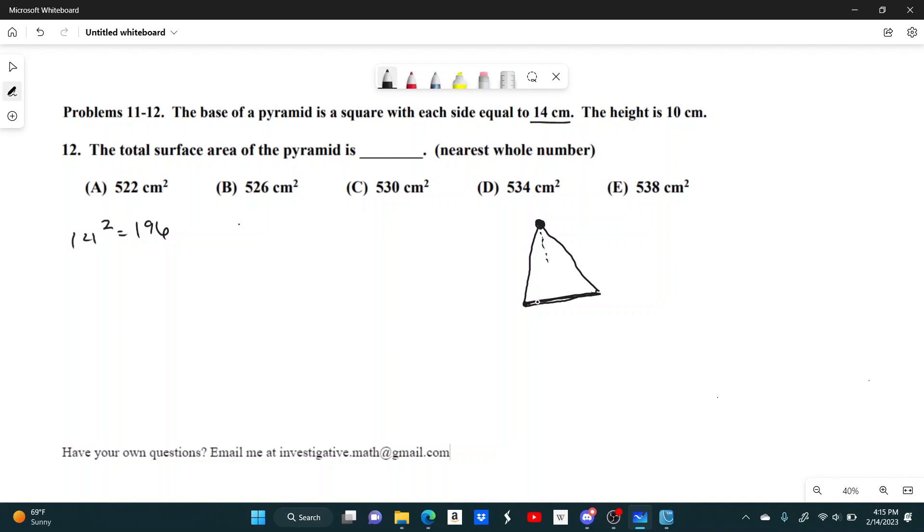So it tells you the height is 10. And then this right here, this distance here, would be half of the side of the square. So imagine this is the apex, and I'm drawing it straight down, perpendicular to the base. This right here would be the center of the square. And so from here to here would be half the side length, which is 7.